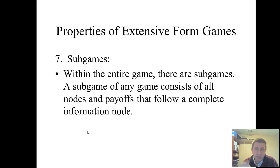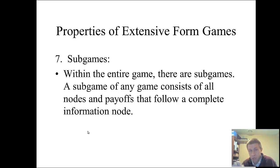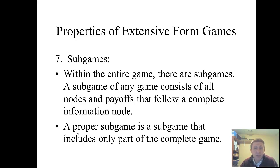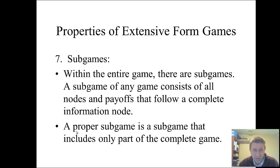The final point: when we talk about subgame perfect Nash equilibrium, subgames come into play. A subgame consists of all nodes and payoffs that follow a complete information node — meaning you can't have a case where a player doesn't know what happened. As long as a player has perfect information starting at a decision point, that is a subgame of the whole game. The entire game is itself considered a subgame. A proper subgame is one that includes only part of the complete game — not the entire game. There are times I'll ask you to count the subgames, usually not for an exam, but so we're all speaking the same language.